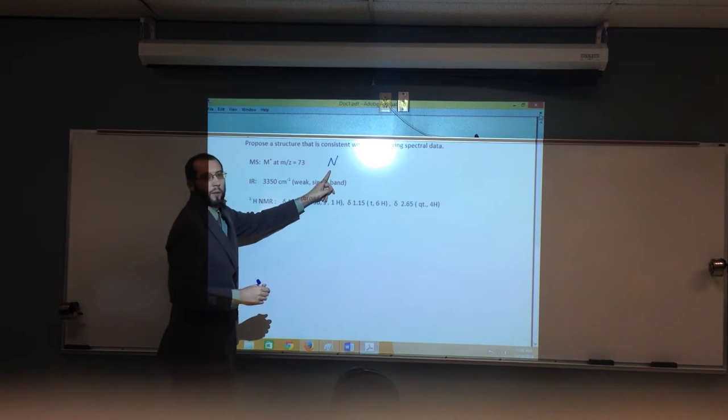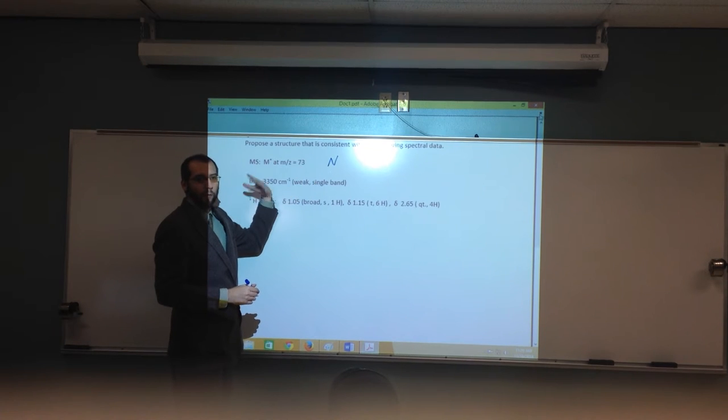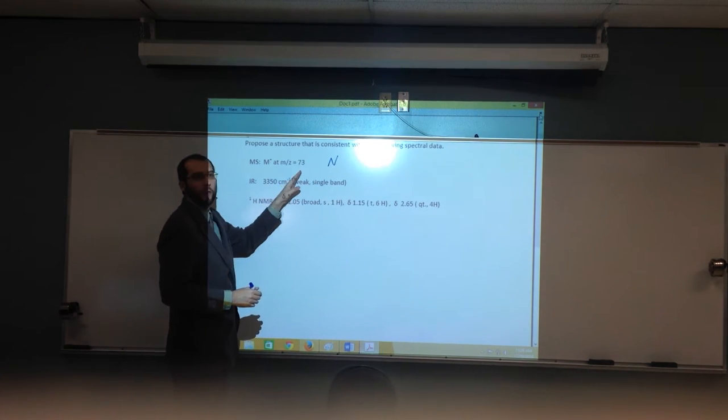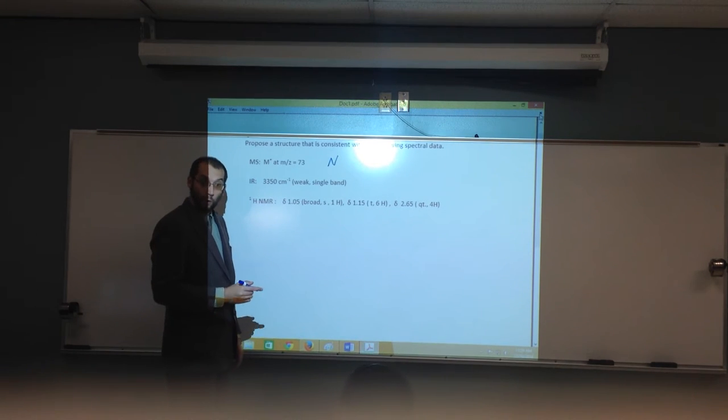So that's one thing we want to remember. And nitrogen is 14, so we can take that away from there, and we can figure out how many carbons it has from that. So how many carbons do you make this thing? Four.